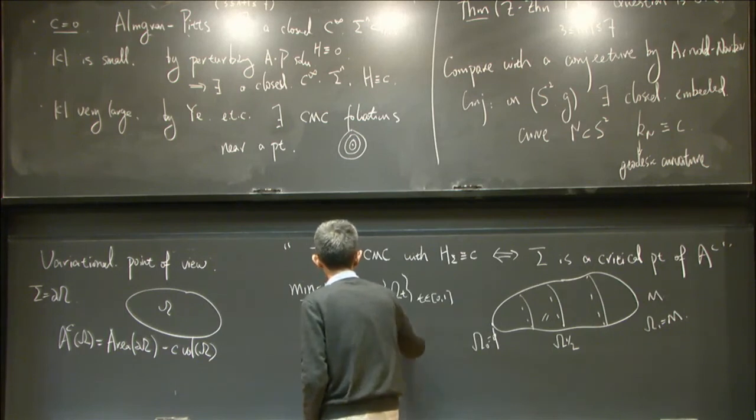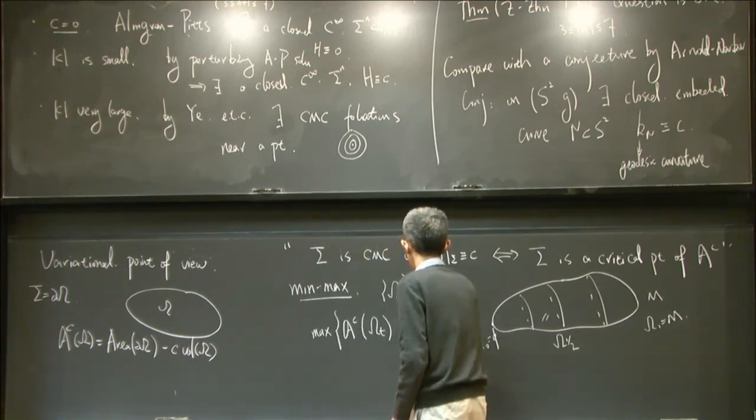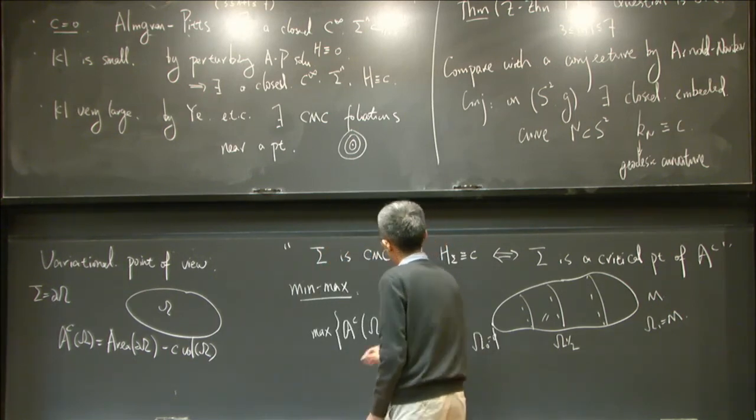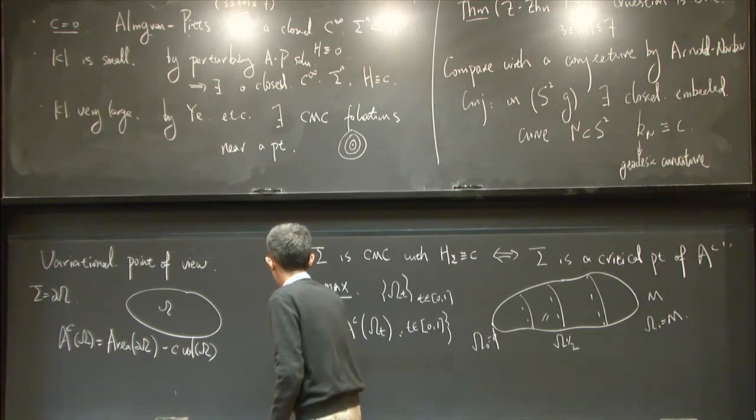So then one can define a min-max value for this new functional. That is, for each of this one-parameter family, we calculate and take the maximum when t goes from 0 to 1. And then take an infimum among all possible one-parameter families.